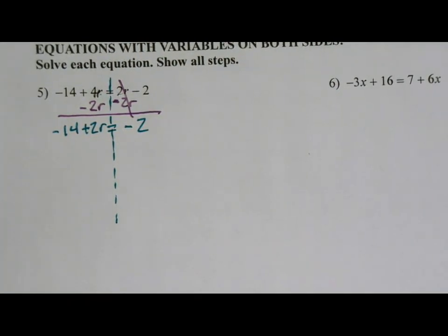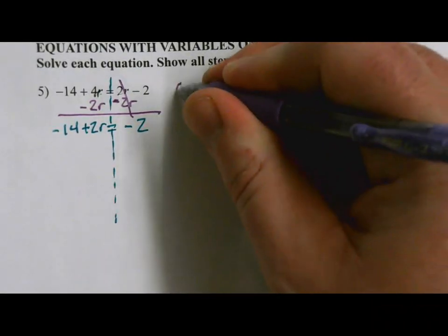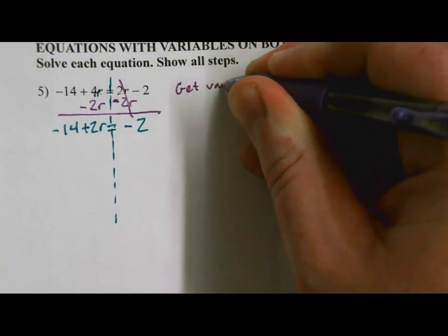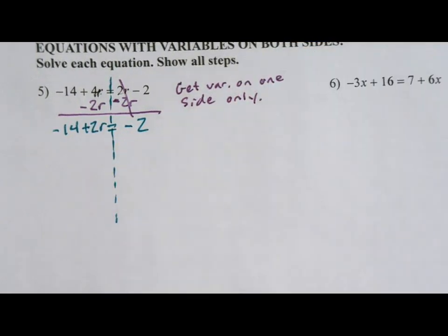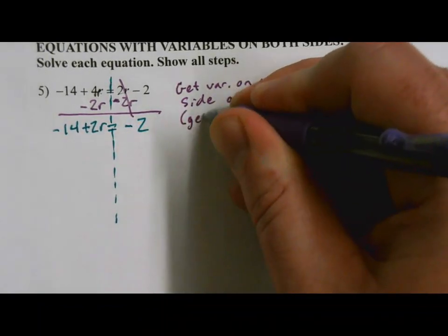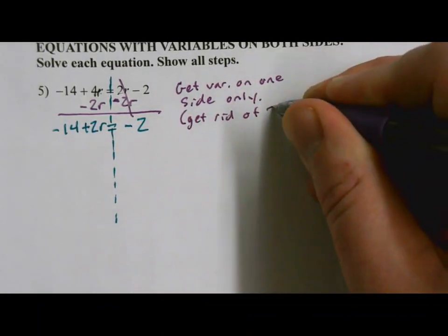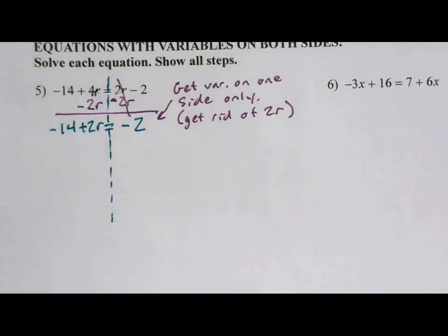Alright, let's annotate as we go on this one. Our first step was to get rid of r's on one side. So we are trying to get our variable on one side only. So what we did was we got rid of 2r. And that got us to here. Now we only have a variable on one side. The only r is over here on the left. So let's go ahead and solve this.